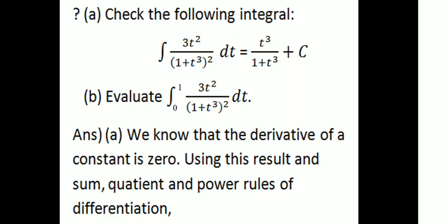Second part: evaluate the definite integral from 0 to 1 of 3t squared divided by (1 plus t cubed) squared dt, and calculate the definite integral value.